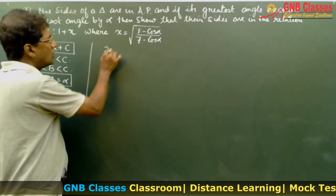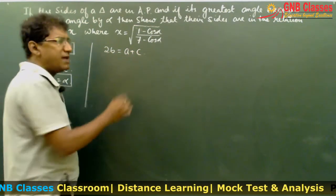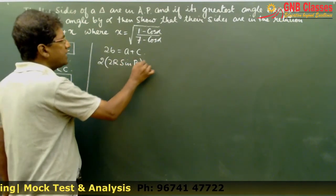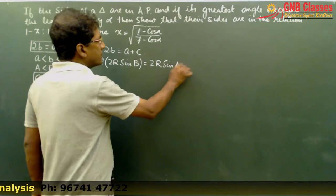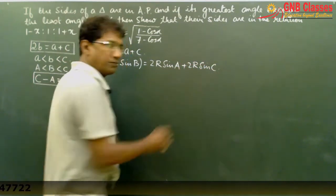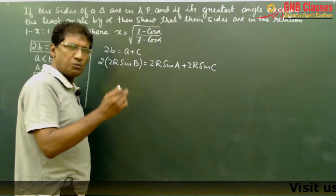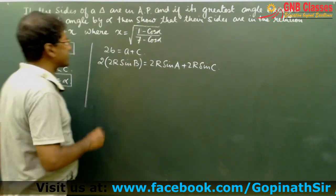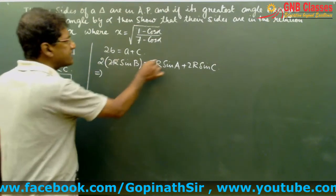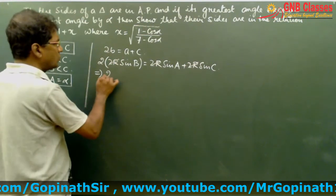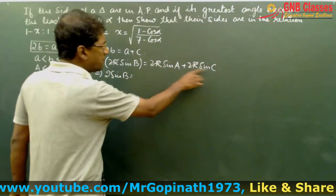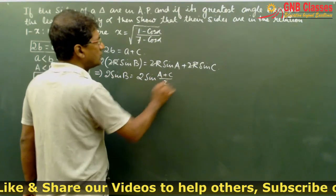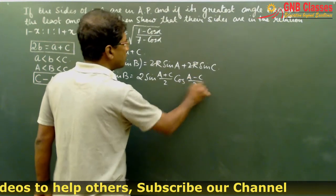Starting from 2b = a + c and applying the sine rule, we get 2sinB = sinA + sinC. Applying the sum-to-product formula on the right side, sinA + sinC = 2sin((A+C)/2)·cos((A-C)/2). The 2s cancel, giving sinB = sin((A+C)/2)·cos((A-C)/2).